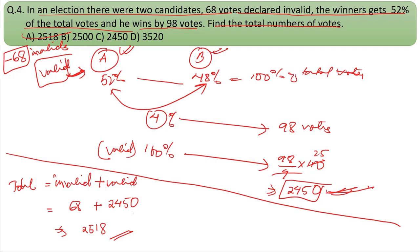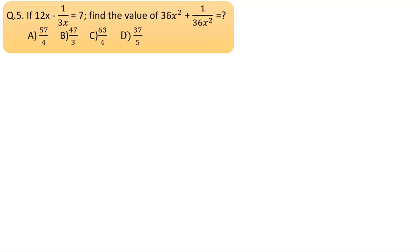Question five: If 12x minus 1/(3x) equals 7, find the value of 36x² plus 1/(36x²). We have 12x - 1/(3x) = 7. We need to find 36x² + 1/(36x²). Note that 36x² is (6x)², so 36x² + 1/(36x²) = (6x)² + 1/(6x)².